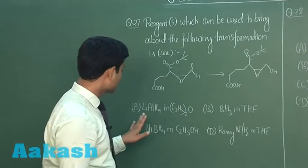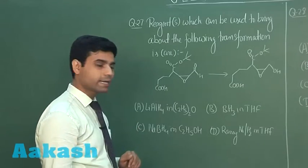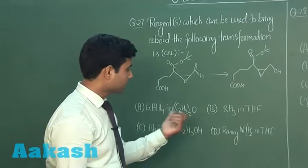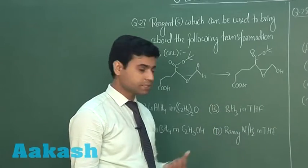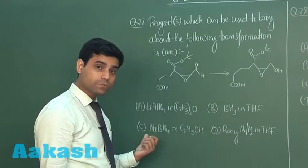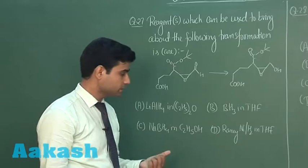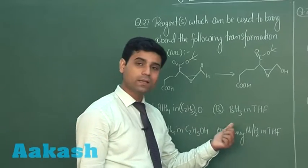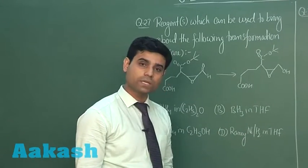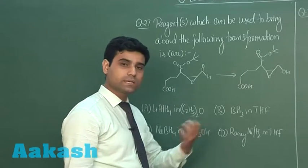The options given are: lithium aluminum hydride in diethyl ether, second option is BH3 in THF, third option is NABH4 in C2H5OH, and the fourth option is Raney nickel hydrogen in presence of THF. So we have four options here.